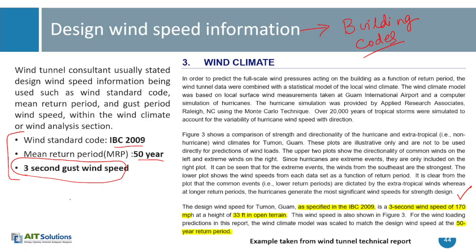For example, ASCE 7-16 prescribes the design wind speed as the 3-second gust wind speed recorded at 10 meter height, and the mean recurrence interval depends on the risk category of your building. Depending upon the risk category in ASCE 7-16, you first go to the hazard map corresponding to that mean recurrence interval and then pick the 3-second gust wind speed.